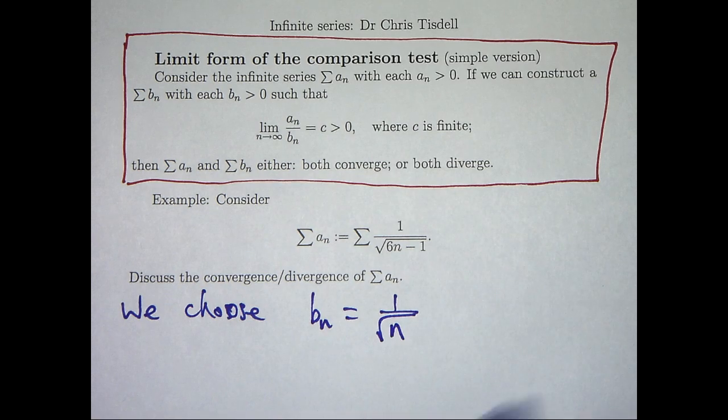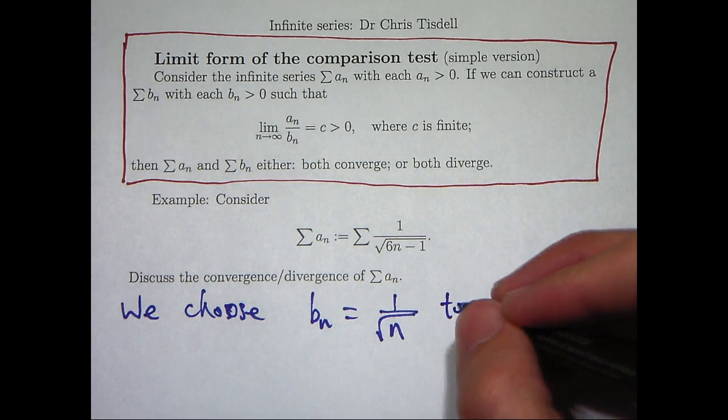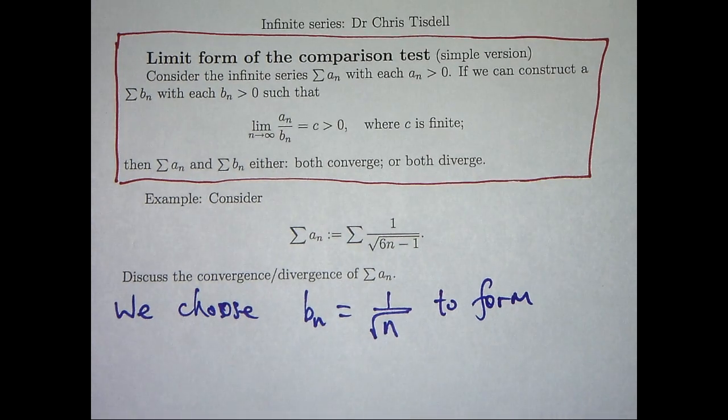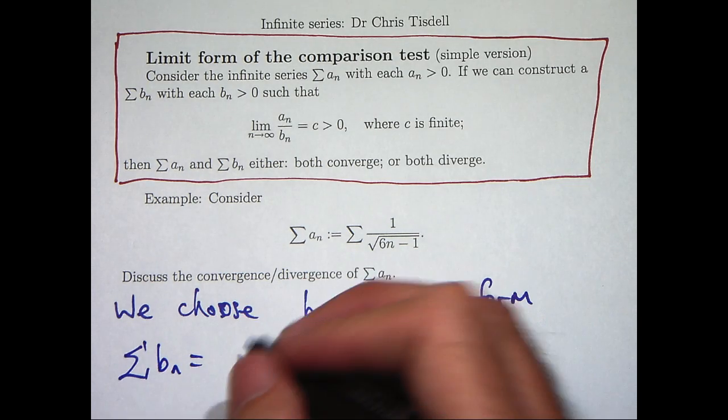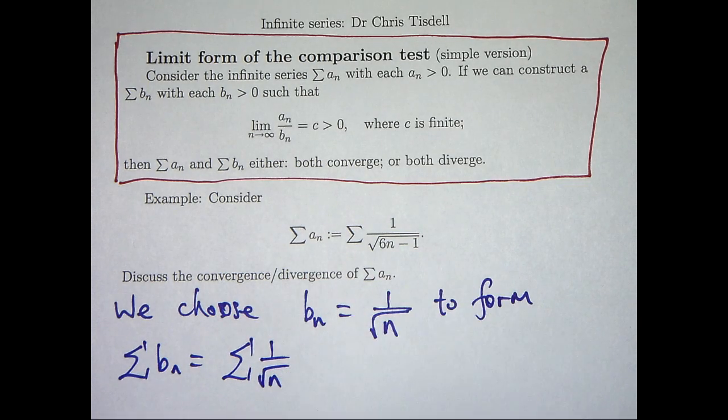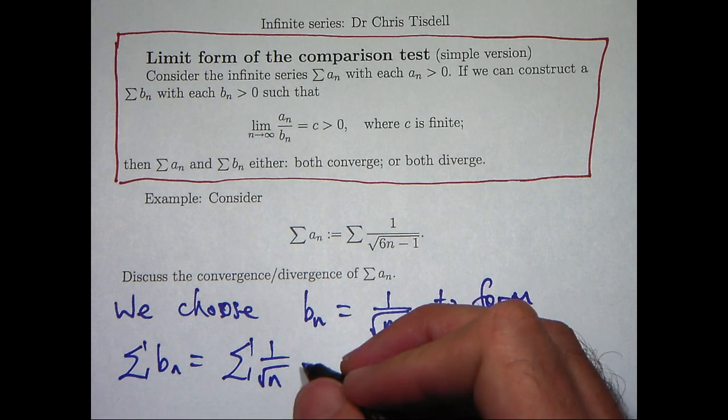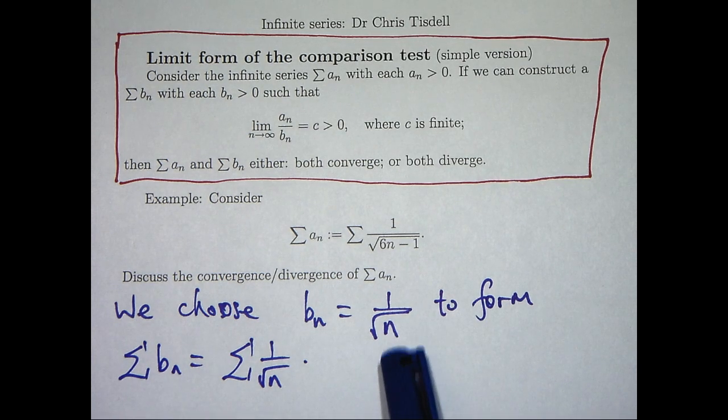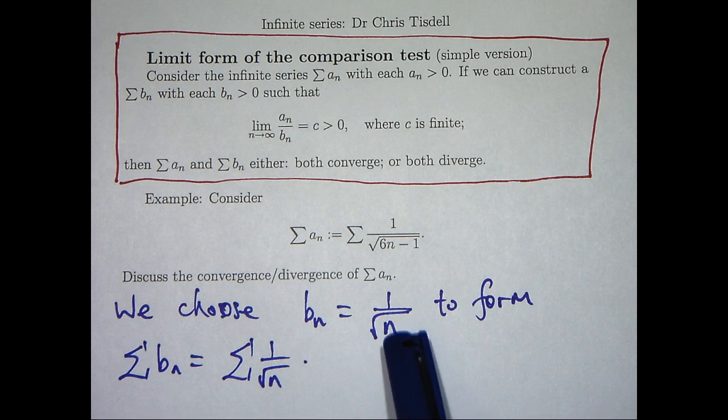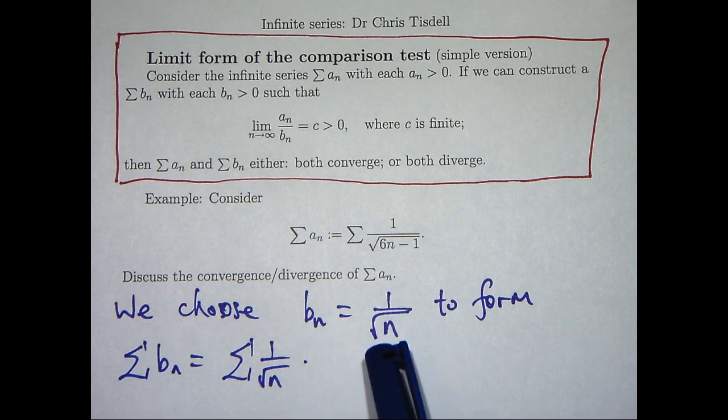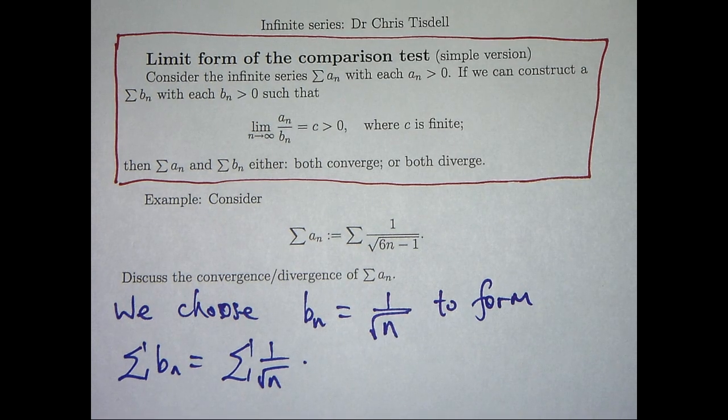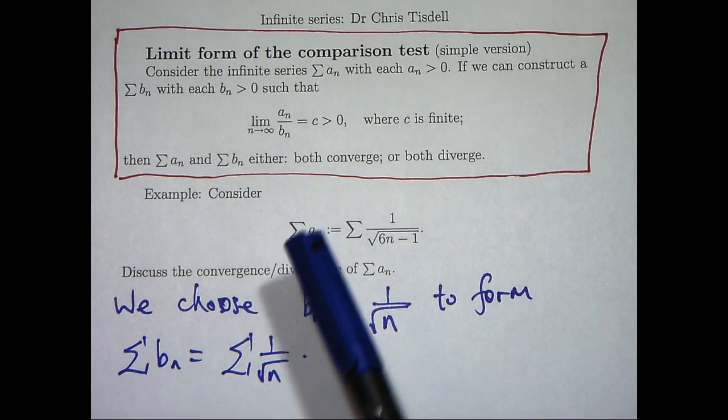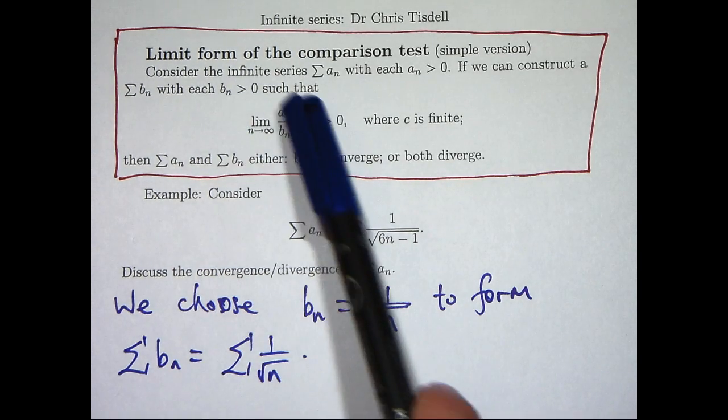So, I'm going to choose bₙ to be 1/√n to form our new series. I didn't need to really choose 1/√n there. I could have chosen other things like 1/√(6n). But the important thing here is the power. Alright. Now, the next thing we have to do is test the limit of this ratio.